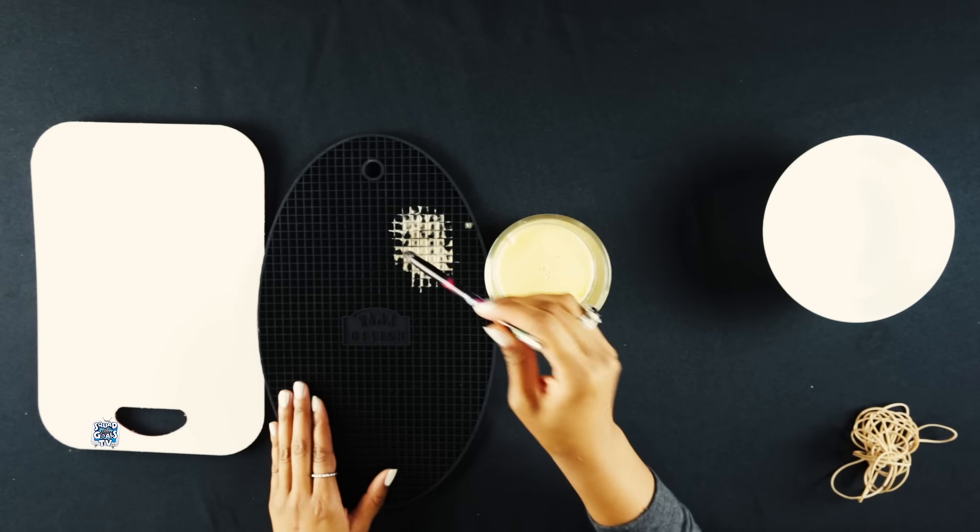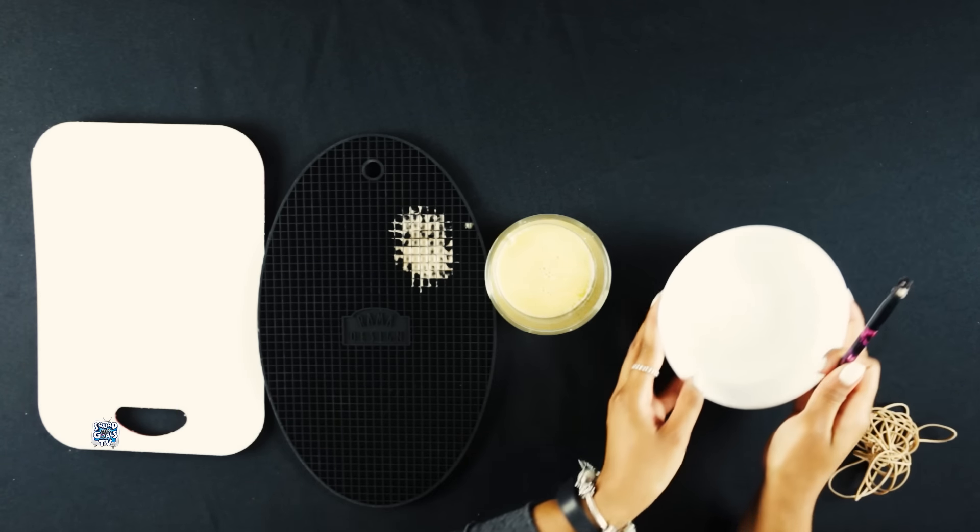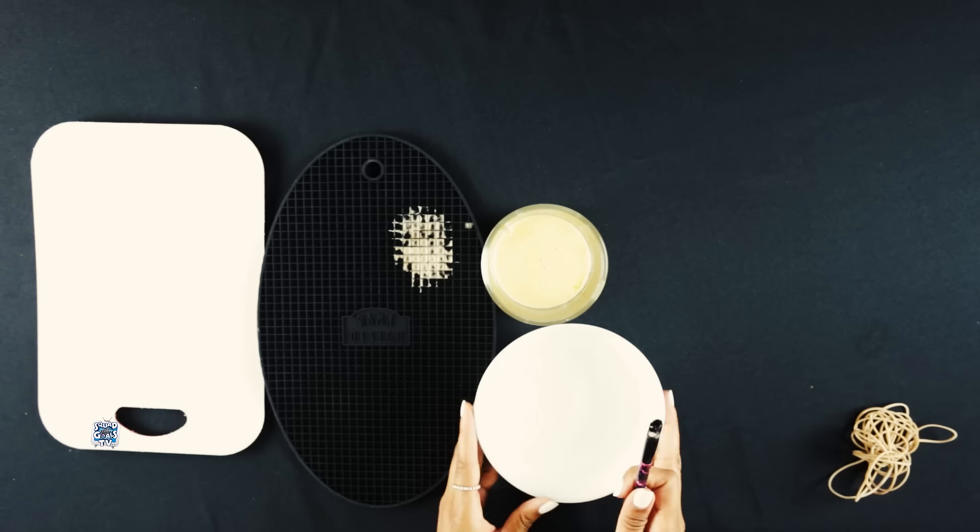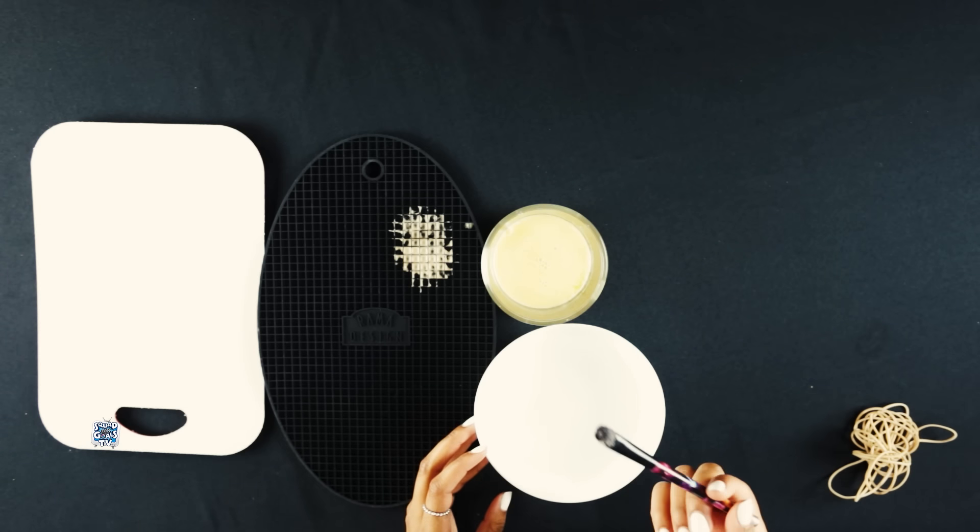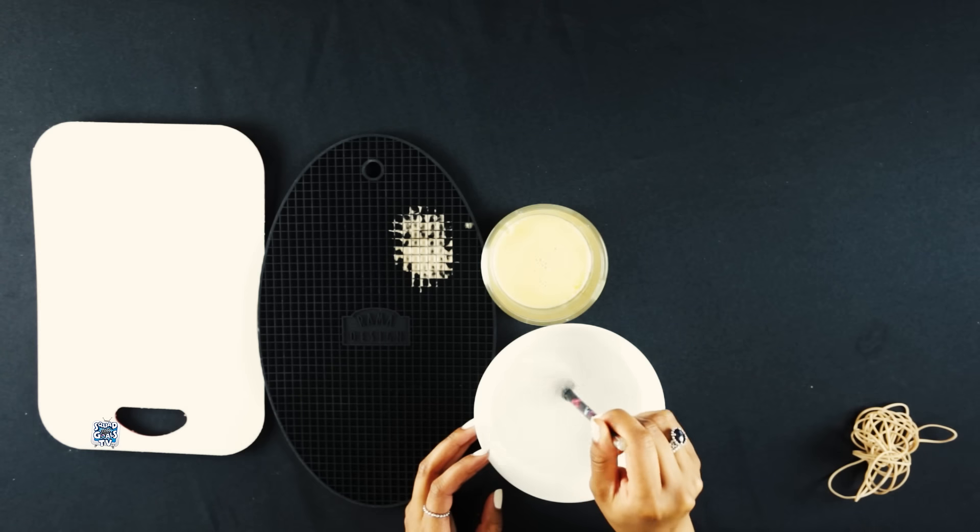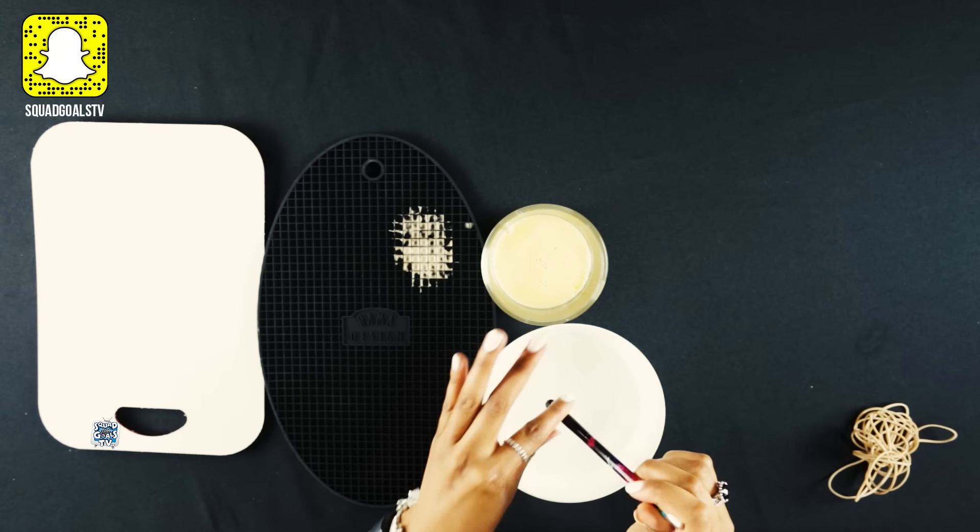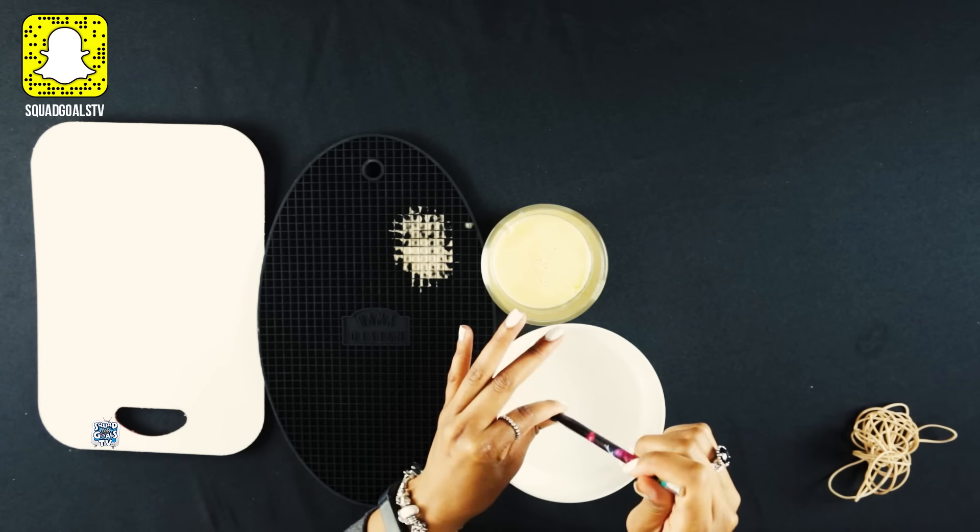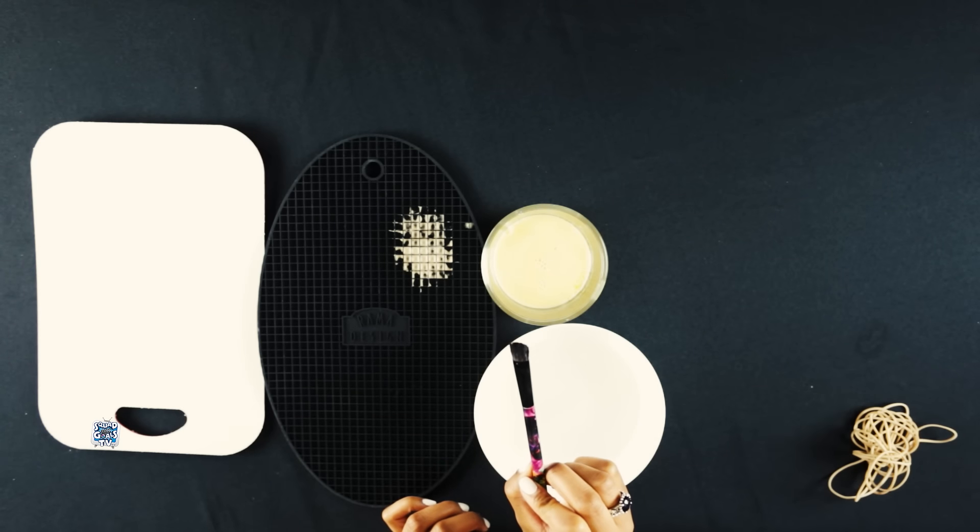Once you do that, then you'll take some water. Now normally I would do this under my sink because I would be doing more than one brush, but for the purpose of this I'm just going to put it in here and then drain it out. And there you go, a clean brush.